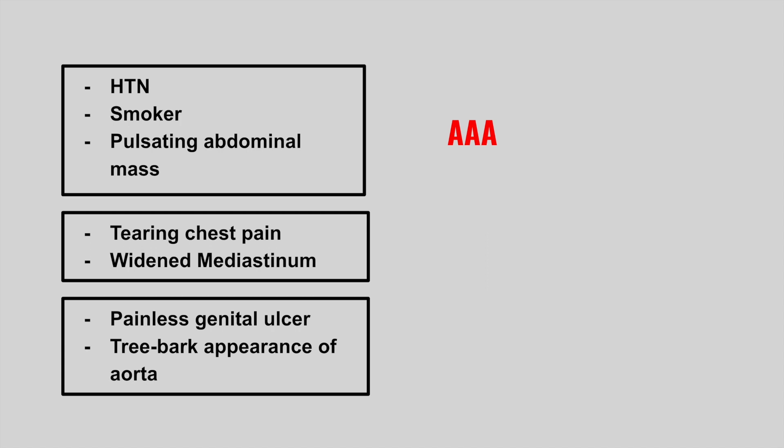The next one is someone who presents with tearing chest pain and a widened mediastinum. This is an aortic dissection.